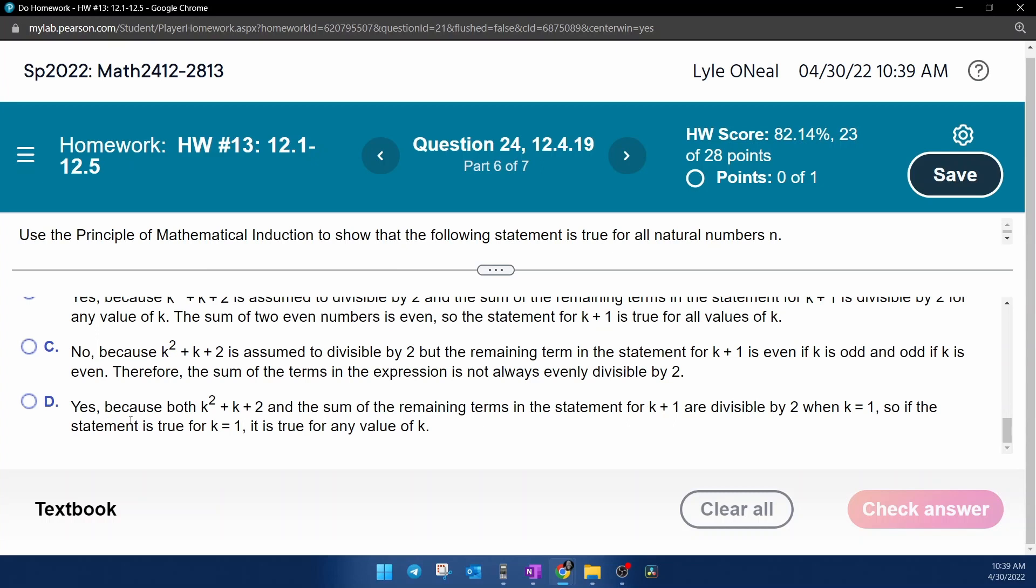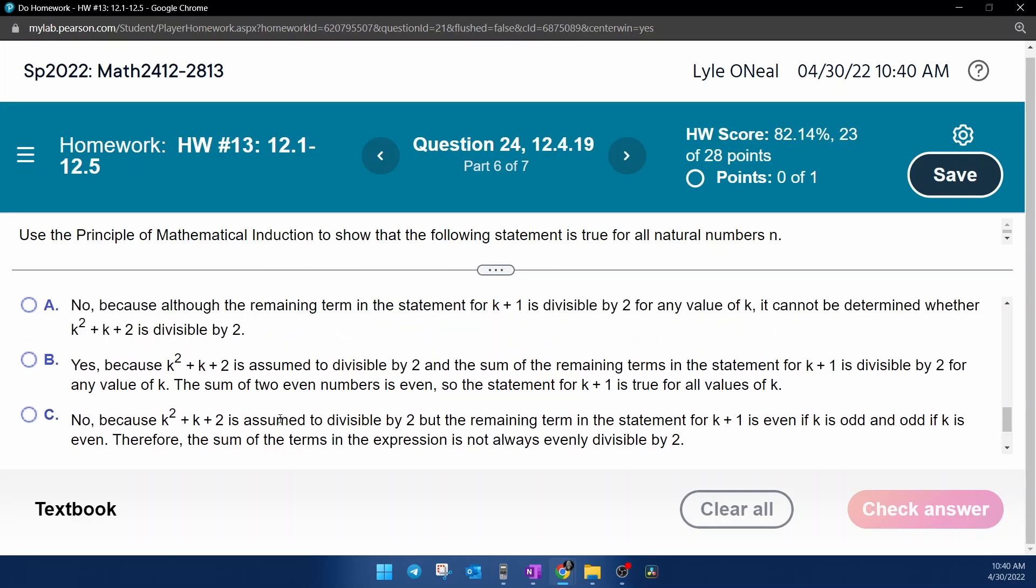Let's read part D and see if this one can be eliminated. Yes, because both the sum for when n is k and the sum of the remaining terms in the statement for k plus 1 are divisible by 2 when k is 1. So if the statement is true for k equals 1, it is true for any value of k. I don't think that's what I just explained. I think this is it. Part B.